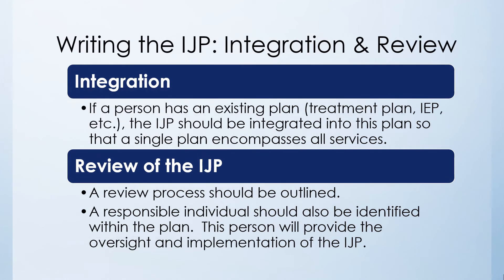If a person has an existing plan such as a treatment plan, IEP, or outcome support plan, the team should identify whether the IJP will be integrated into that existing plan, serve as a standalone plan, or be an addendum to a current plan. It's important to ensure consistency between the IJP and other treatment or program plans so that information does not conflict. The IJP should also determine a process and timeline for periodic review and identify a person responsible to ensure that review and update process is done regularly.